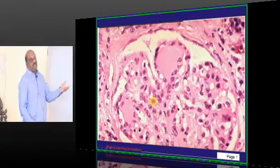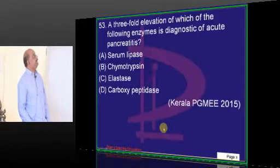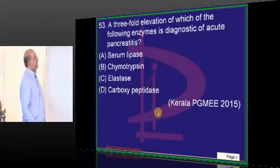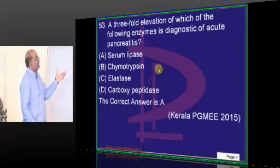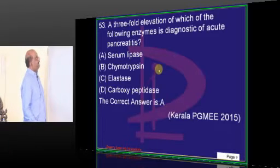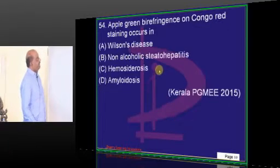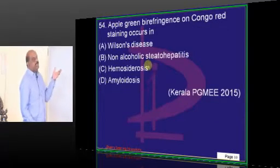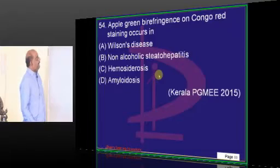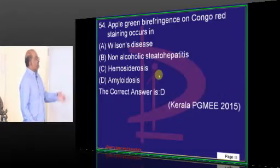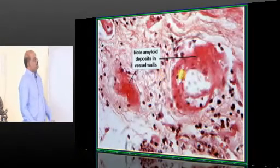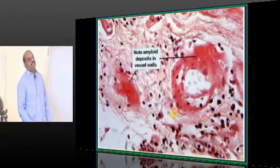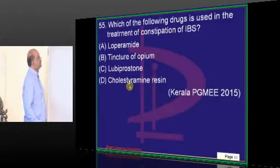Kimmelstein-Wilson is basically diabetic nephropathy. In acute pancreatitis, a threefold increase of lipase is the marker. Apple-green birefringence is what you typically see in the case of amyloidosis.